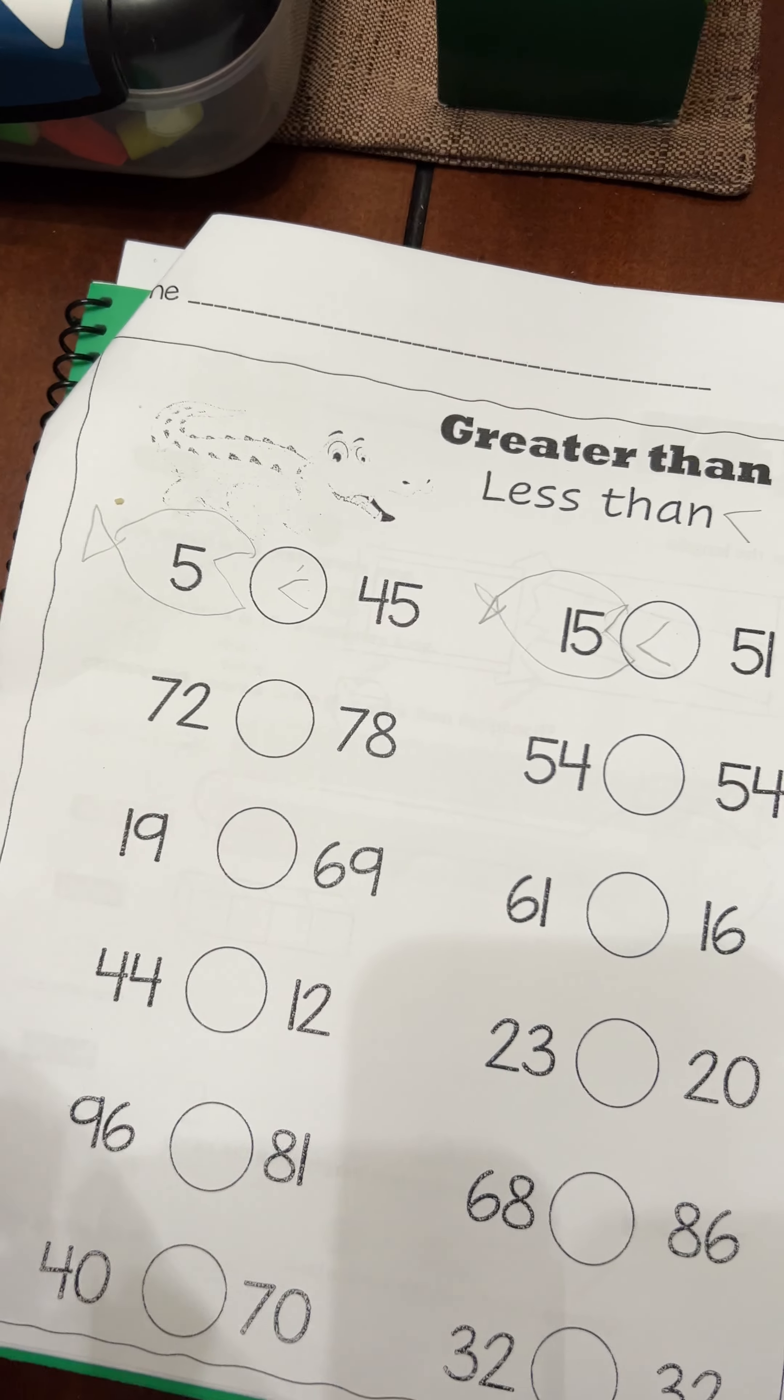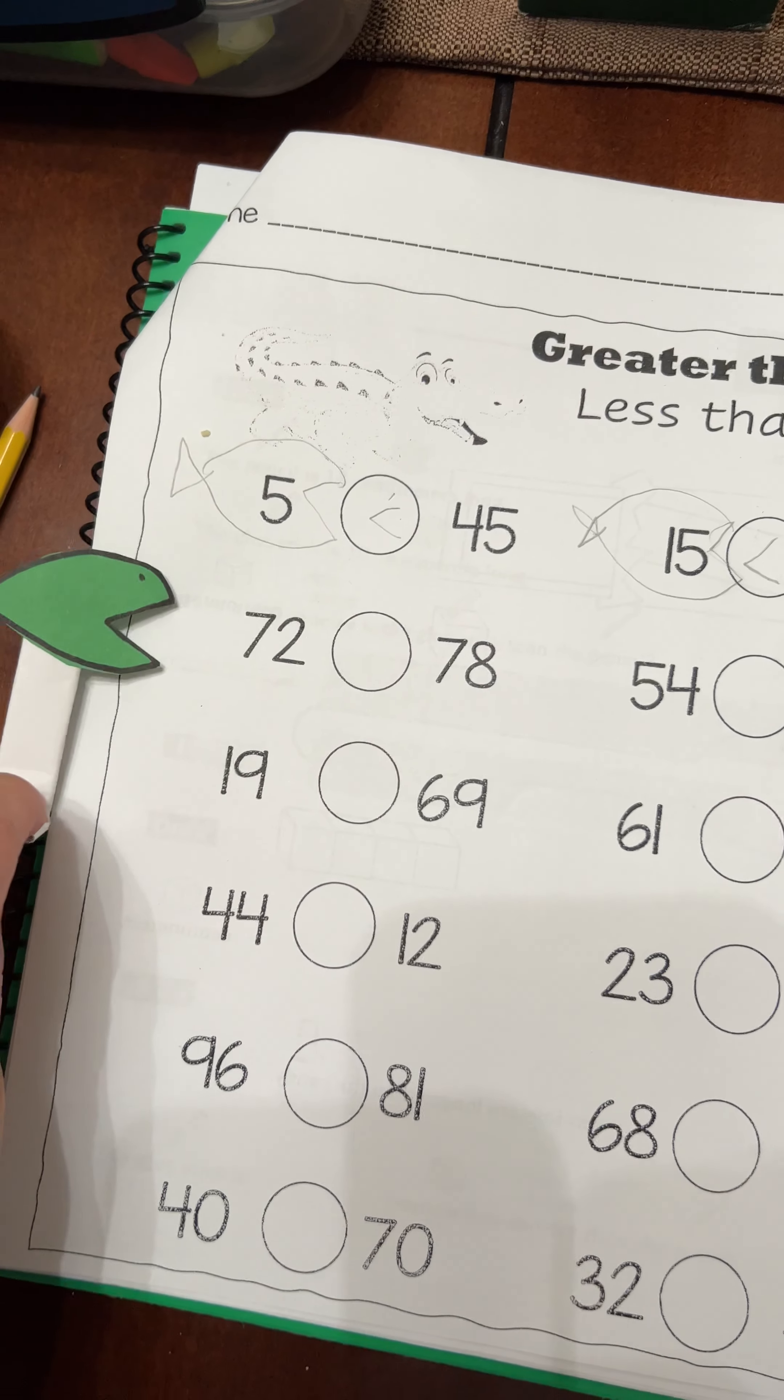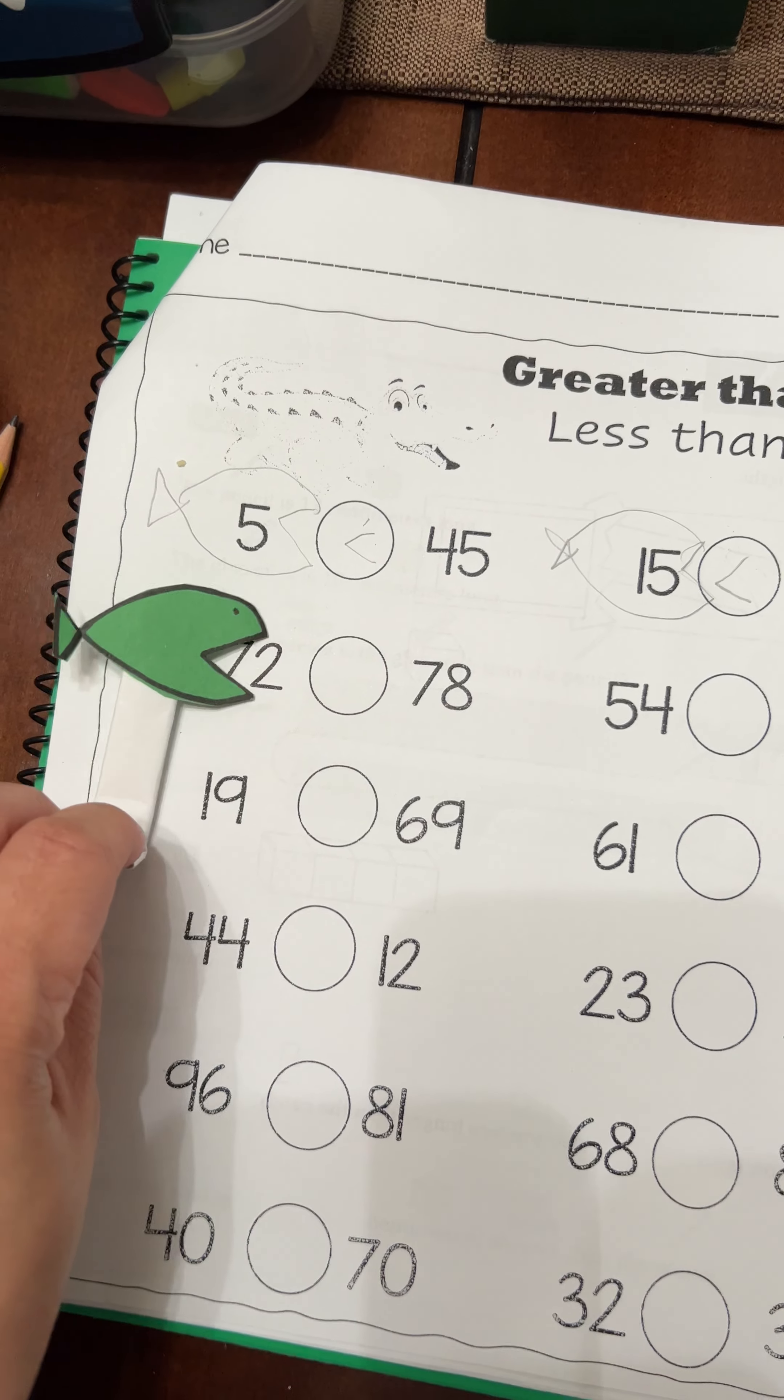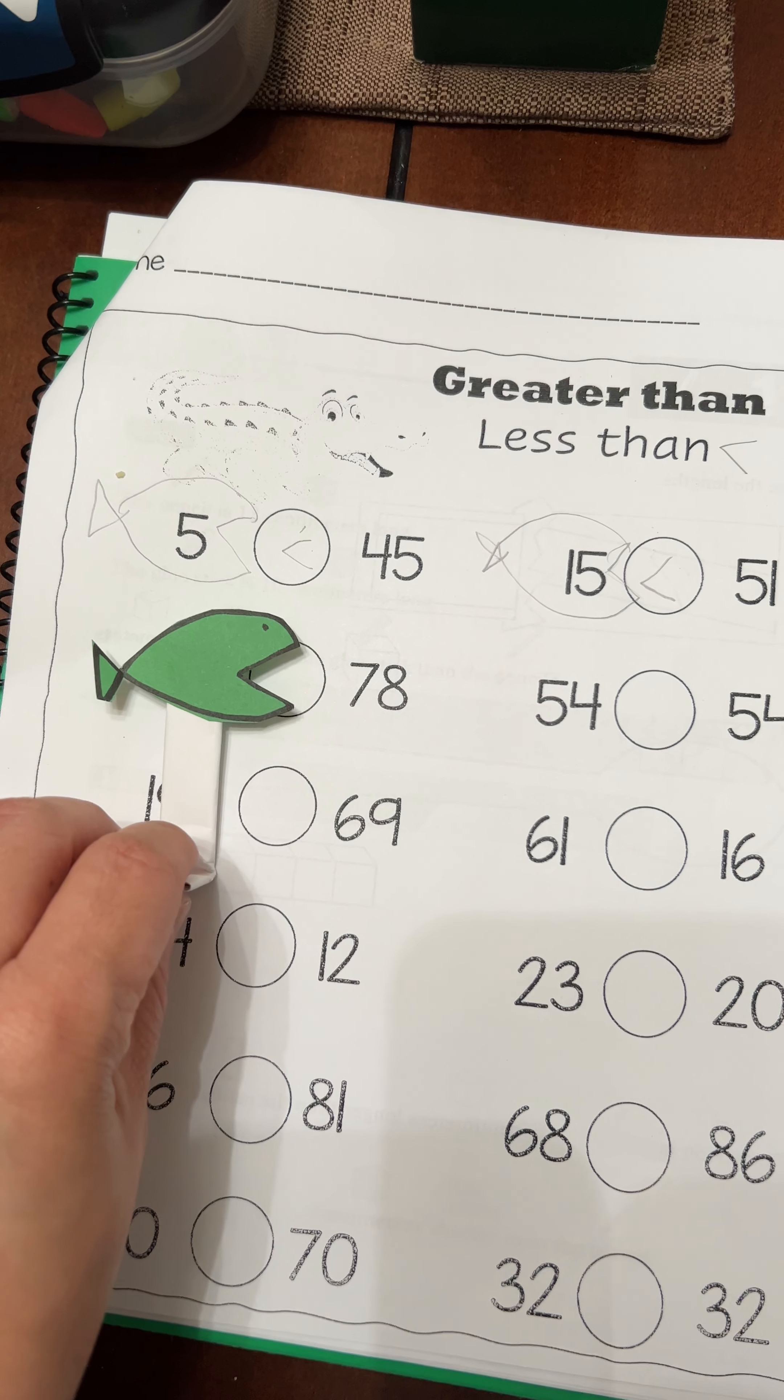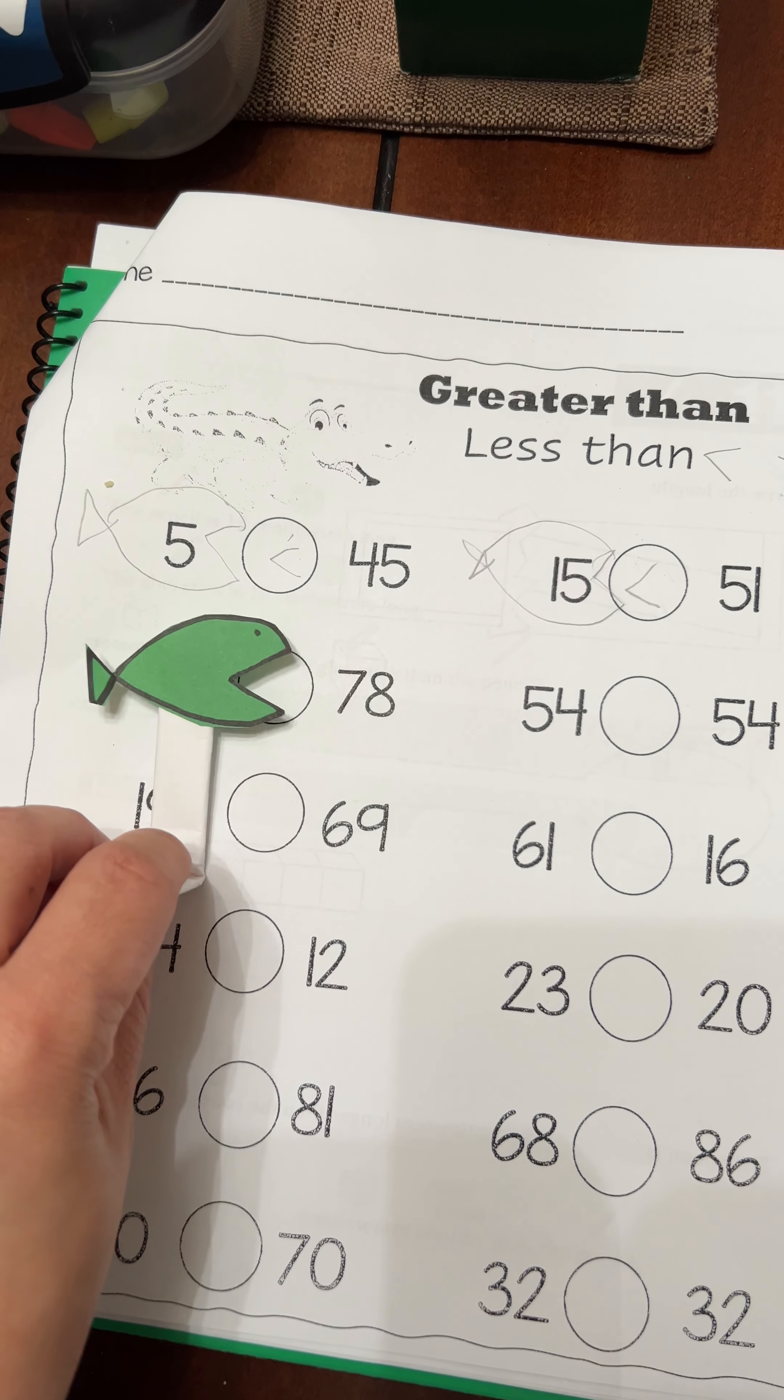So 72 is smaller than 78, so the fish will eat 72 because it's the smaller number. And now he knows how or what direction he should be drawing the symbol.